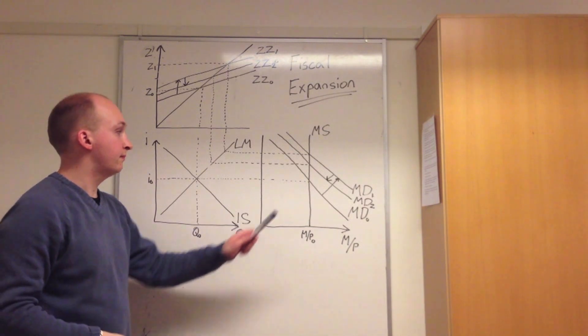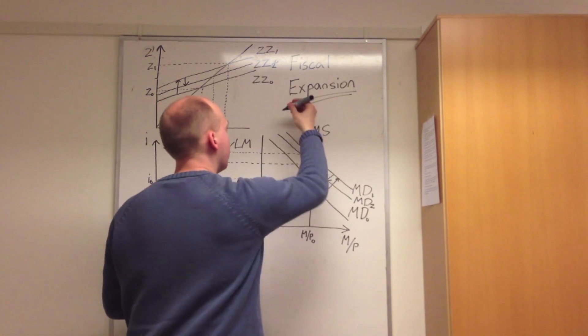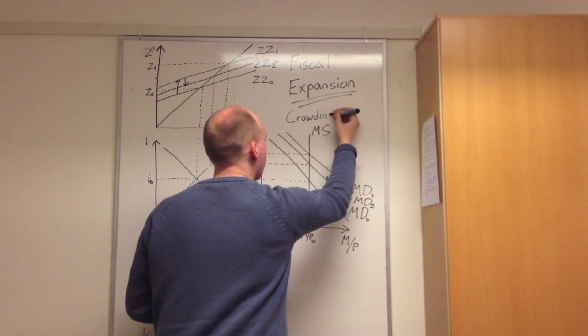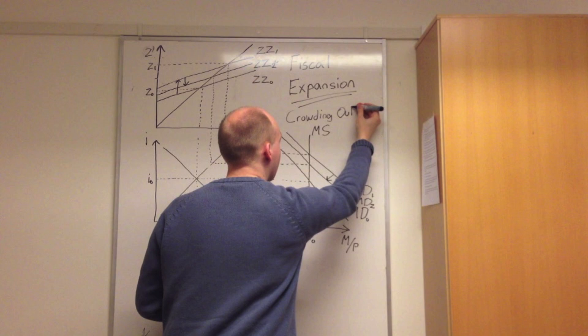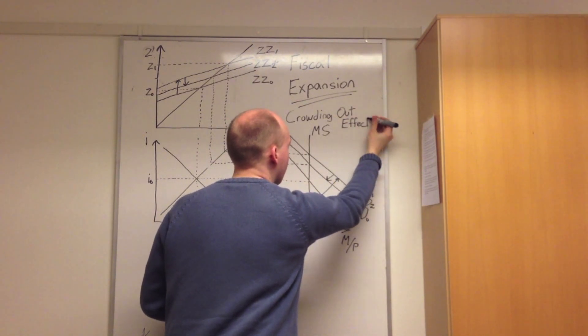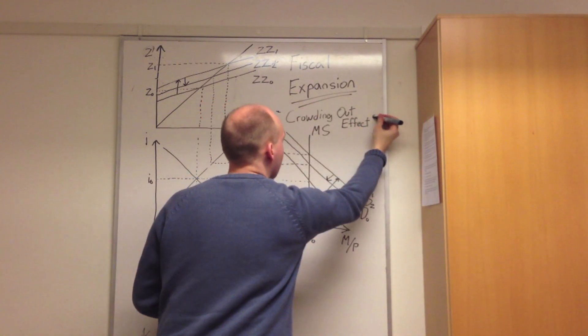Here we see that the fall in investments crowds out the increase in government spending. This is known as the crowding out effect. However, it is noted that even though we have a fall in investments, we still have a greater value than what we had at the initial rate.